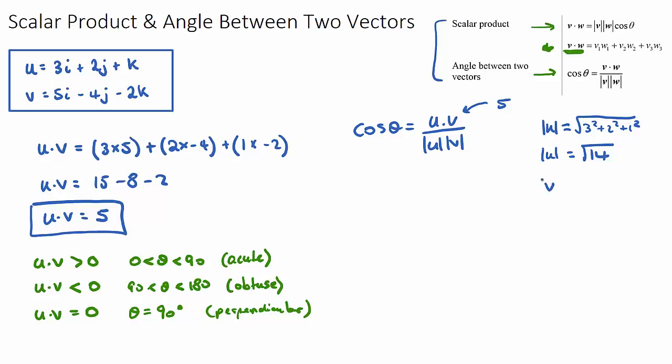And V, this will be five squared plus negative four squared plus negative two squared. So the magnitude of vector V will be the square root of 25 plus 16 plus 4. 16 and 4 is 20 plus 25 is 45.